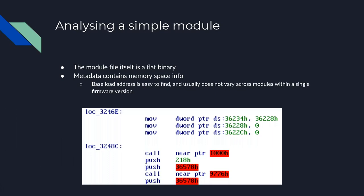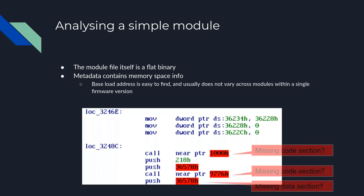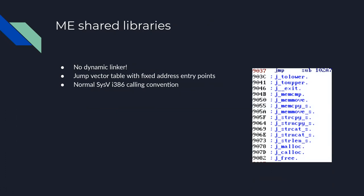When you load a module in a disassembler like IDA, it disassembles fine but references all kinds of memory you don't have access to. You might think you've loaded it at the wrong address or are missing a library. You've loaded it correctly if you use the address from the metadata file, but you are in fact missing a lot of memory segments. The ME uses shared libraries even though it's flat binaries, because with only one and a half megabytes of RAM you don't want to link your C library into everything.